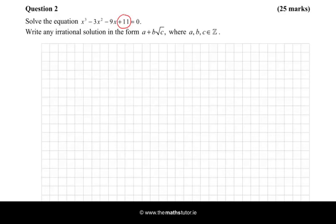So we're looking for some number which is a factor of 11 and there are only really four candidates here. We're going to try 1, minus 1, 11 and minus 11.